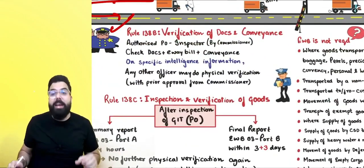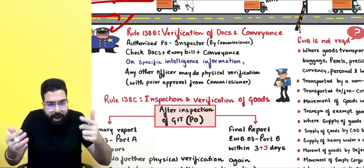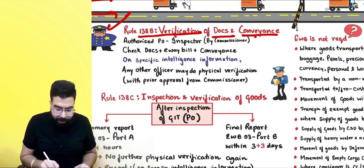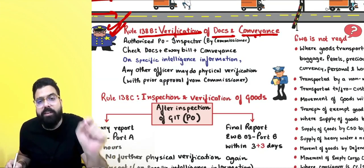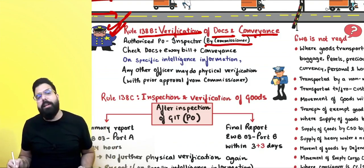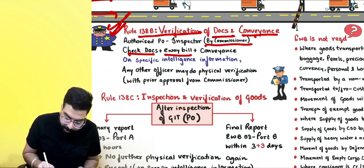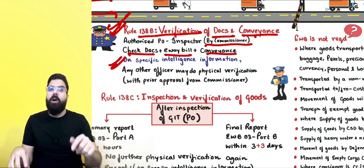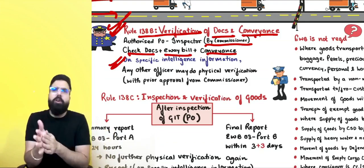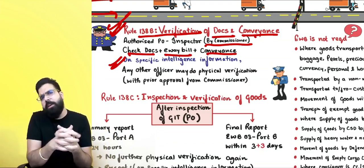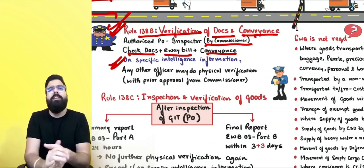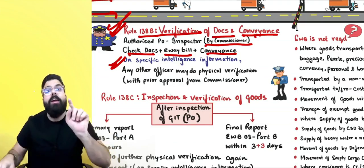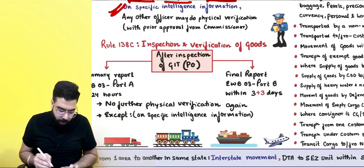Rule 138B covers verification of documents and conveyance. An authorized proper officer — an inspector authorized by the Commissioner — will stop you, check the documents, e-way bill, and the conveyance. If the inspector is not available, any other officer can check, but there must be some intelligence information and that officer must have the Commissioner's prior approval.